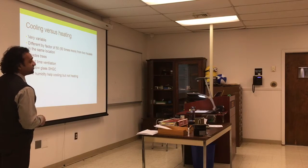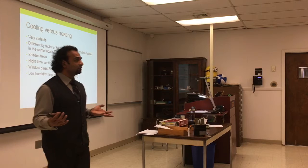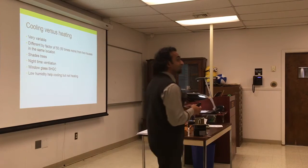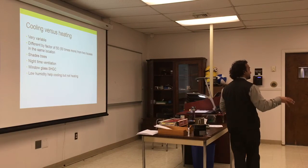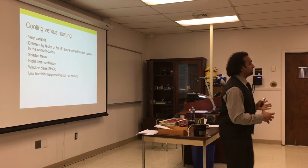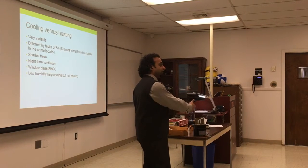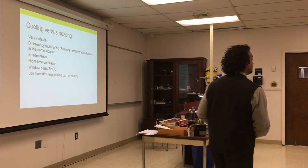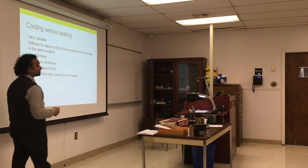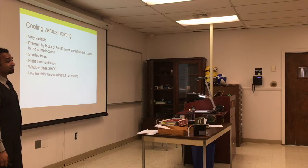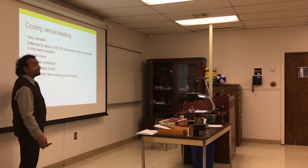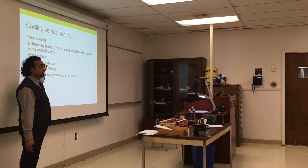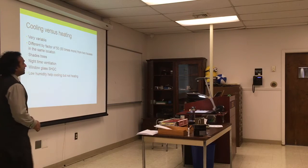Cooling versus heating is very variable — two houses next to each other in the same neighborhood can differ a lot in cooling, but heating does not make as big a difference if they have the same materials. For cookie-cutter houses, location and orientation make a big difference: where does the sun hit, are the windows facing north or south, what kind of trees do you have, is there a water pond nearby? The difference can be up to 50 times between two houses.